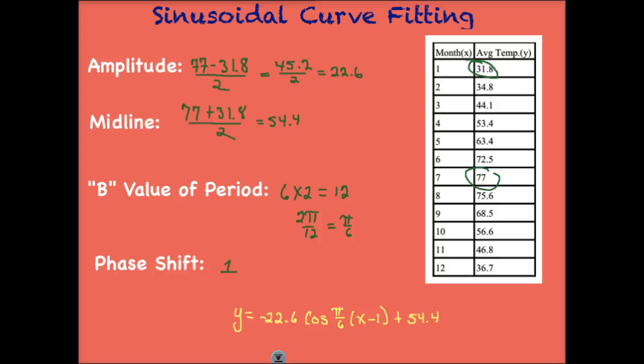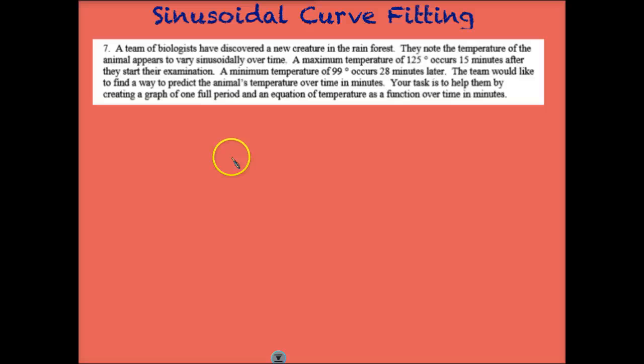Let's do one last example. In this example, a team of biologists have discovered a new creature in the rainforest. They note the temperature of the animal appears to vary sinusoidally over time. A max temperature of 125 degrees occurs 15 minutes after they start their examination. A minimum temperature of 99 degrees occurs 28 minutes later. The team would like to find a way to predict the animal's temperature over time in minutes. Your task is to help them by creating a graph of one full period and an equation of temperature as a function of time in minutes.